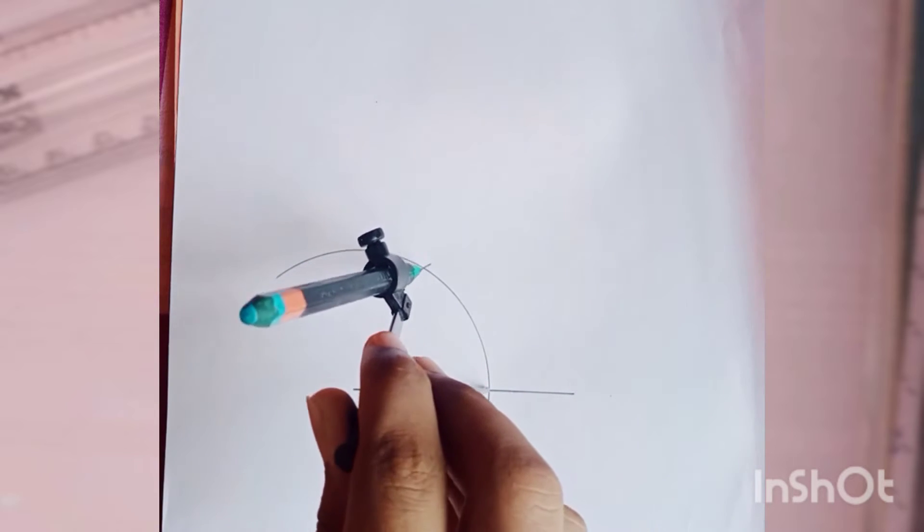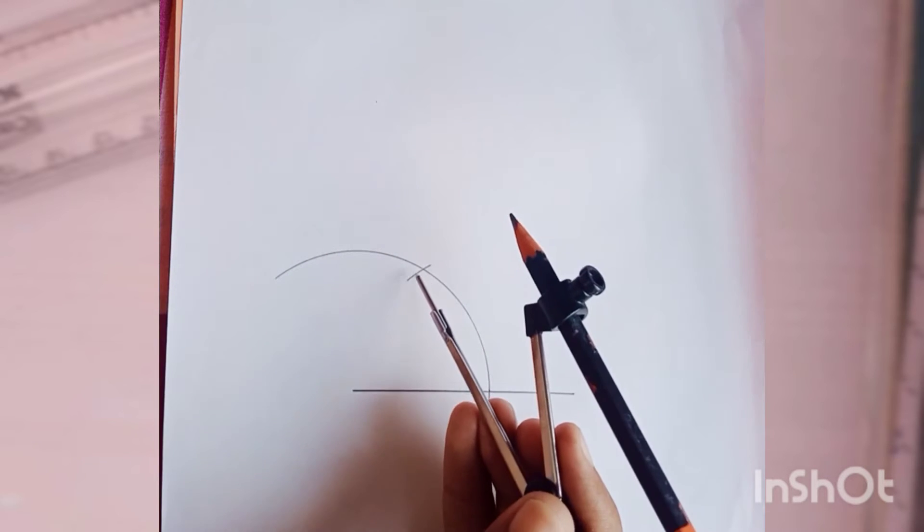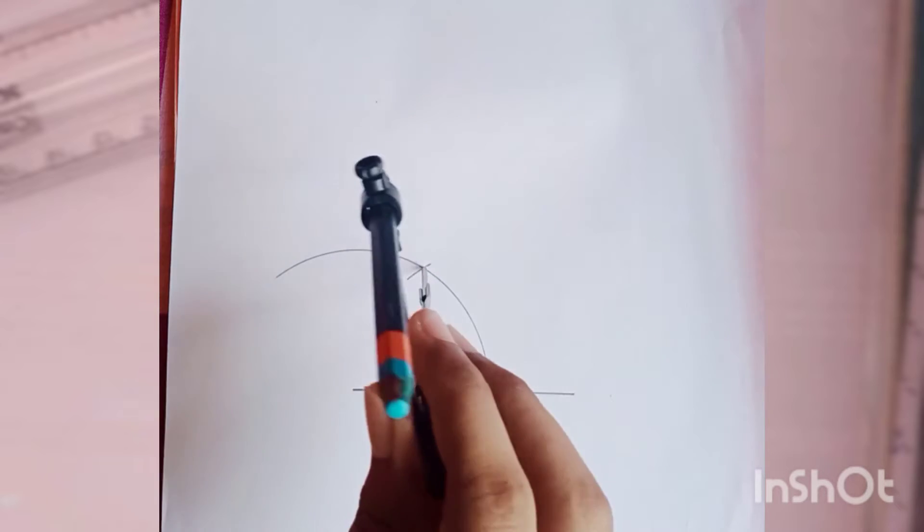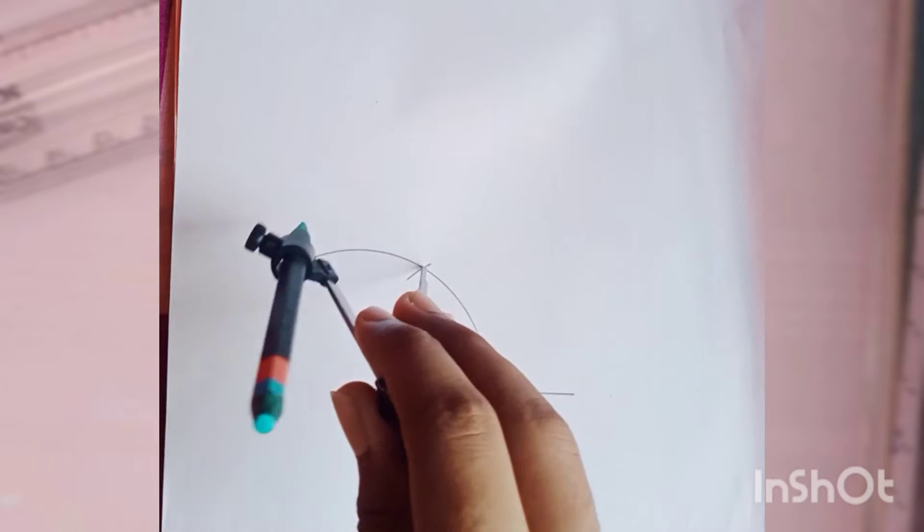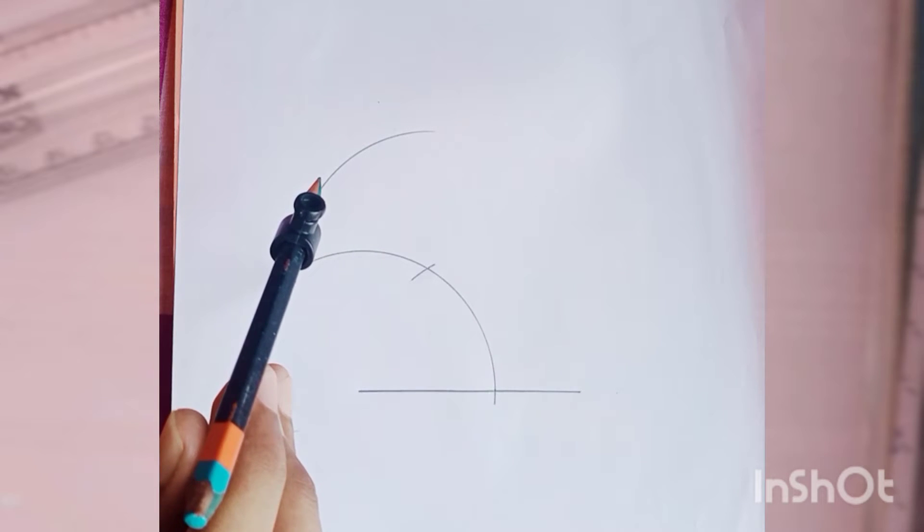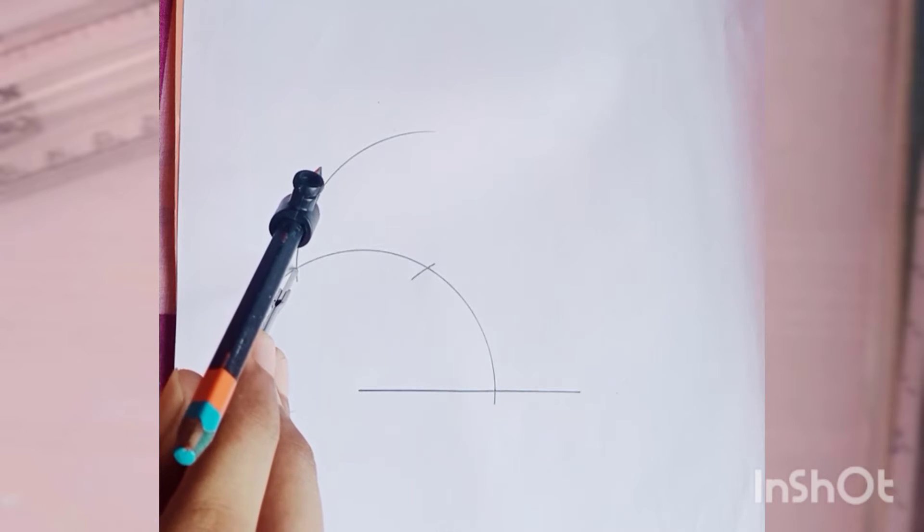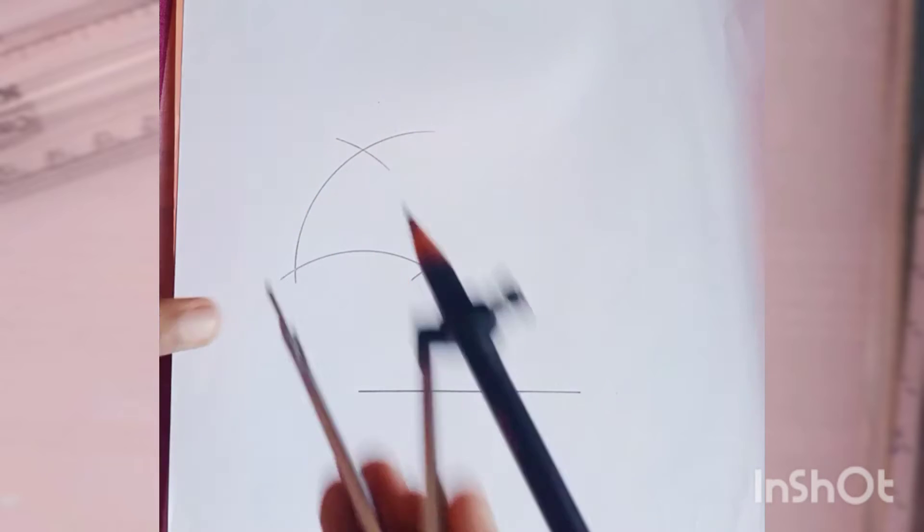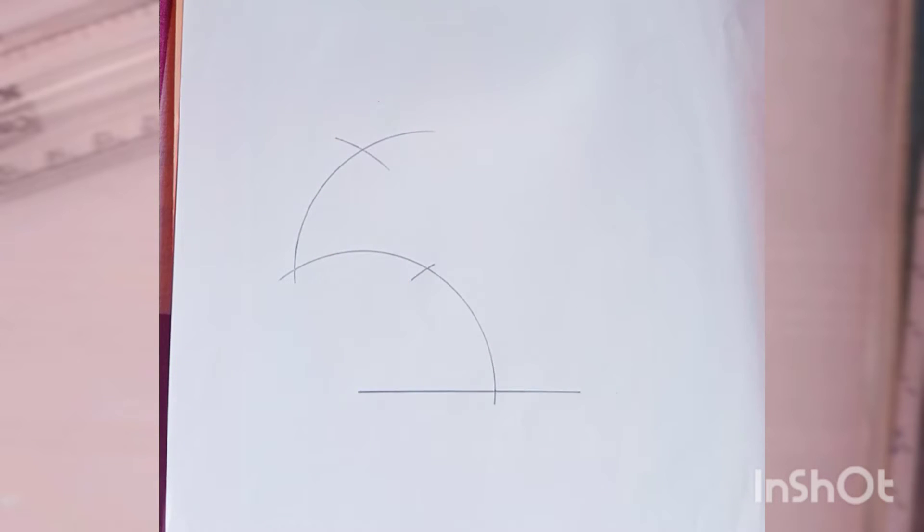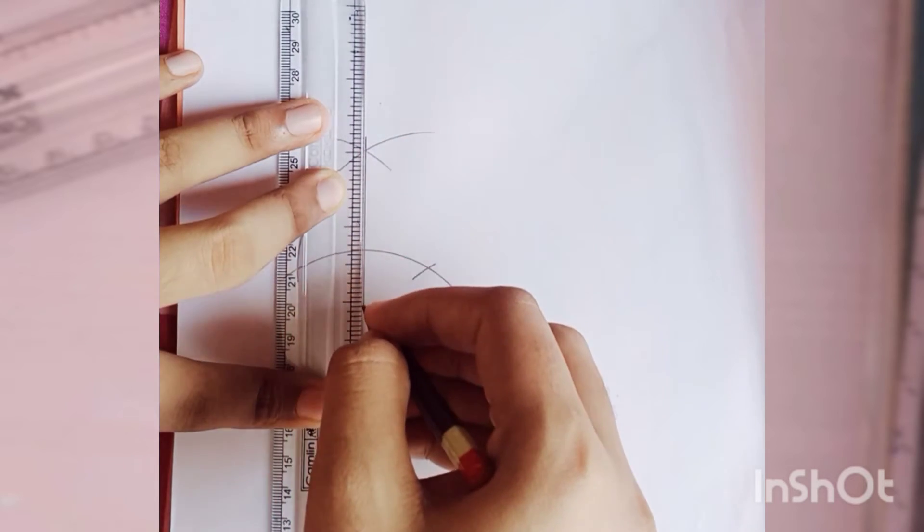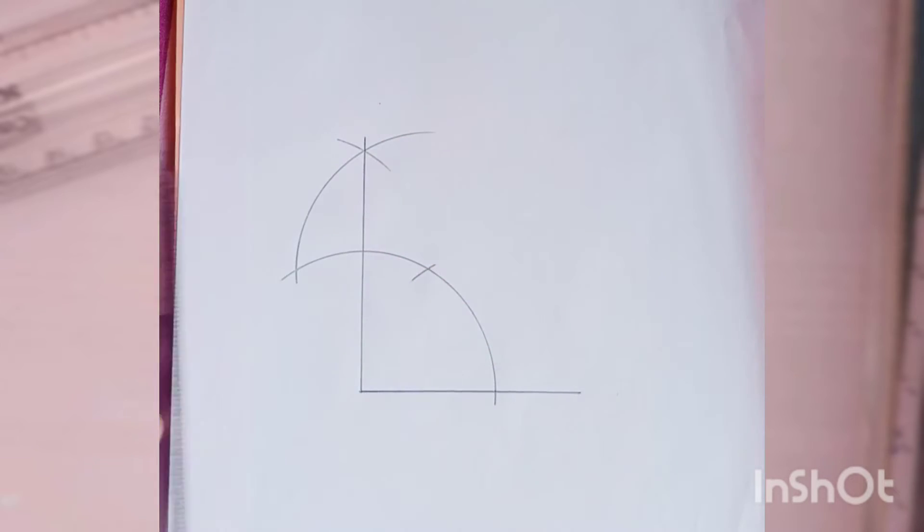This makes 60 degrees, this angle. Again from this 60 degree point we cut another arc. You can cut a long arc also. Then from this point, you keep the needle and cut another arc. This will give you 90 degrees.